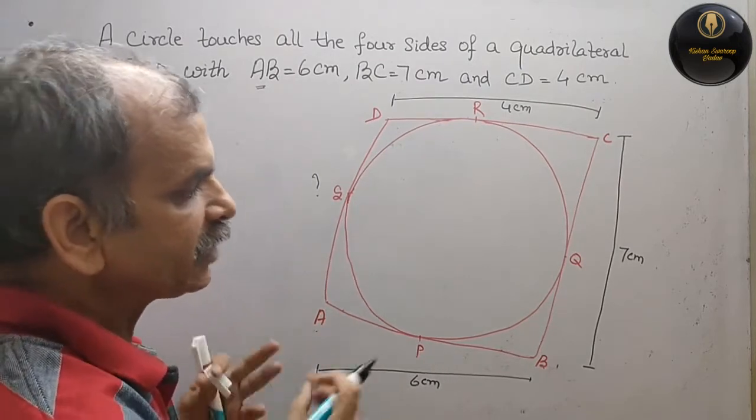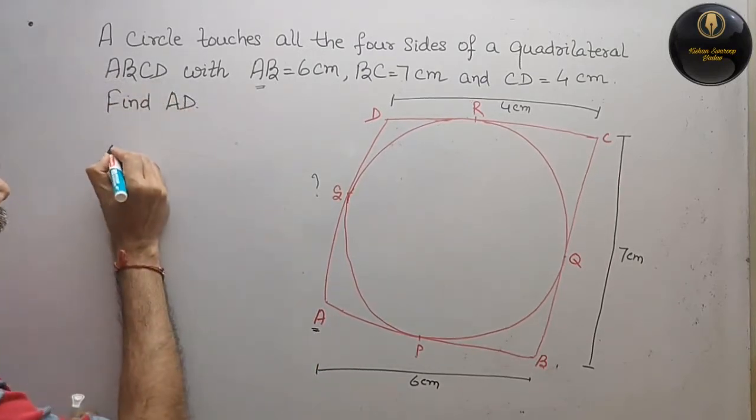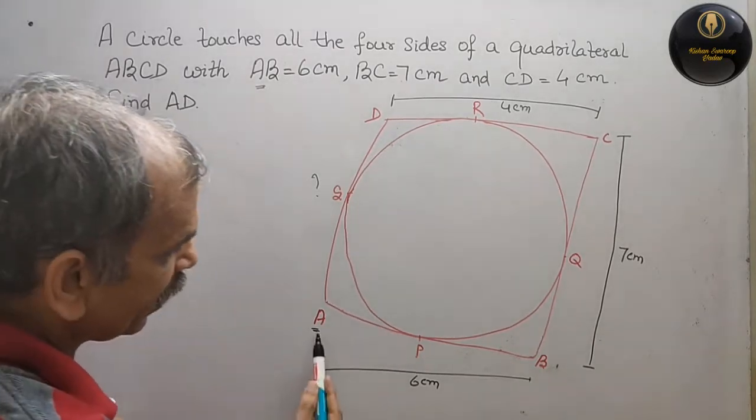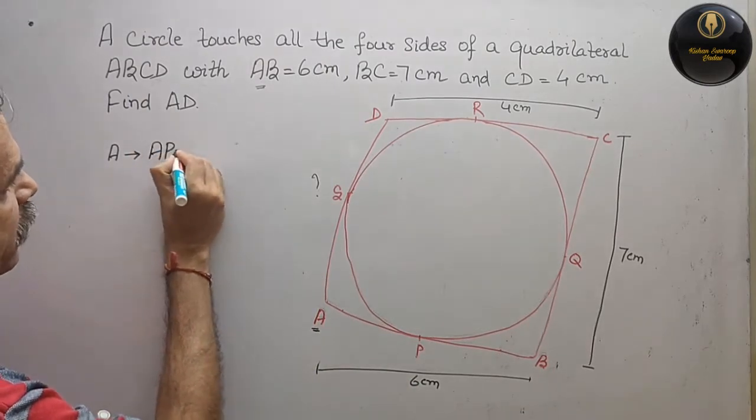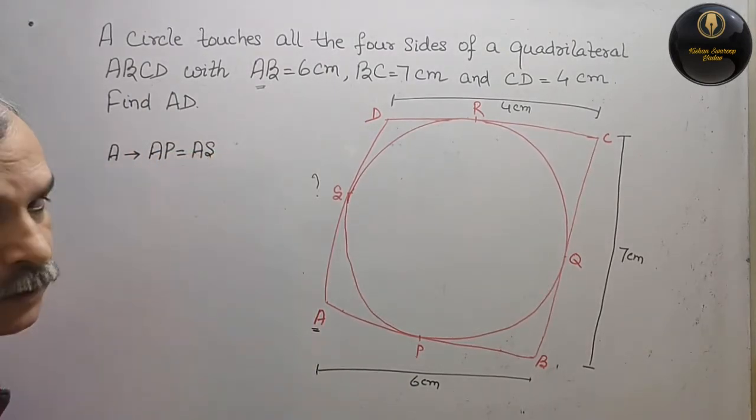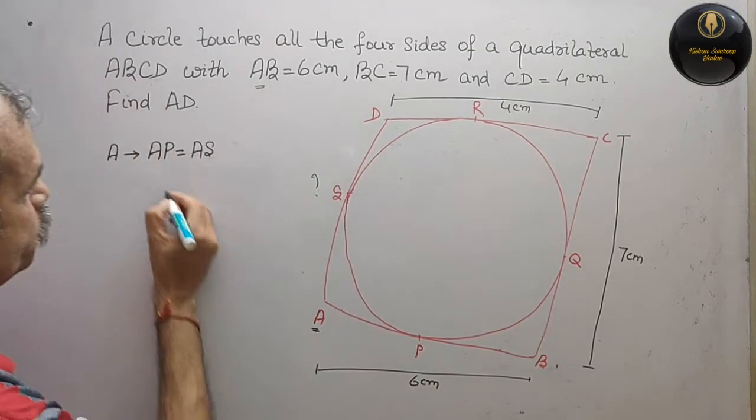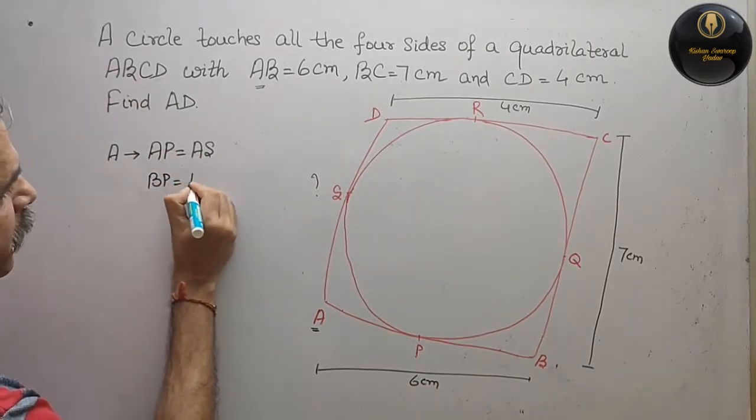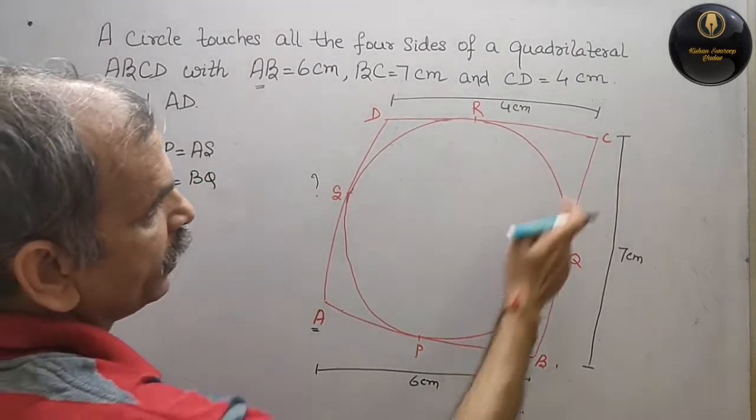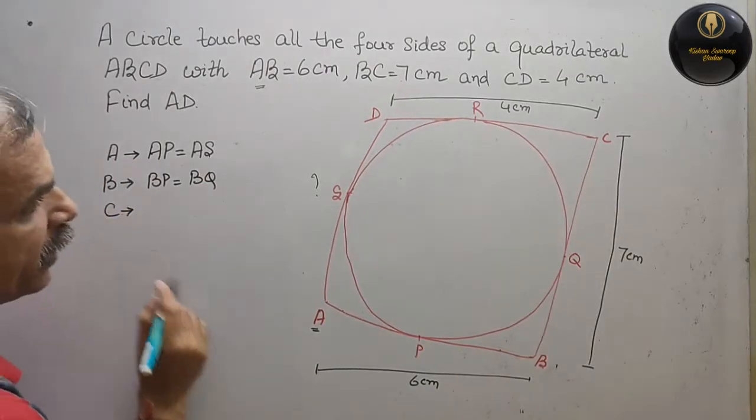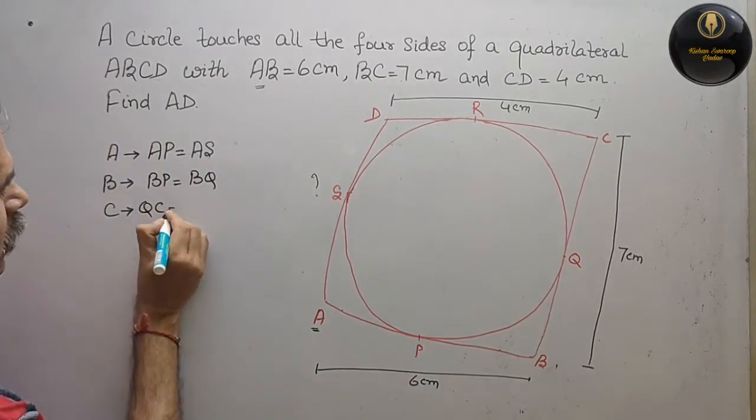Now, this type of question, what you have to do? B is the external point, so you will get QC is equal to CR. QC is equal to CR.